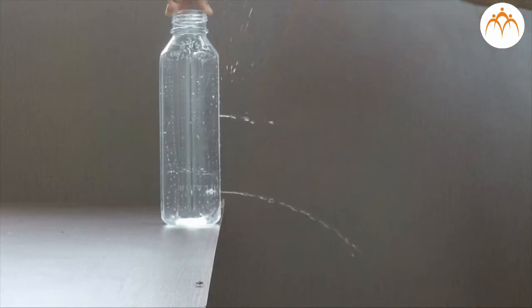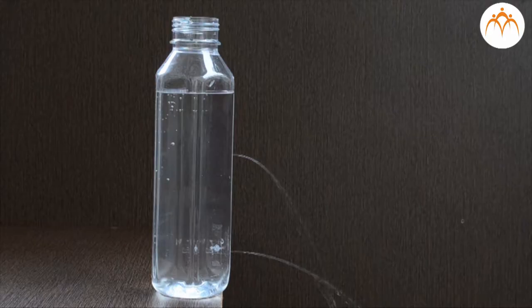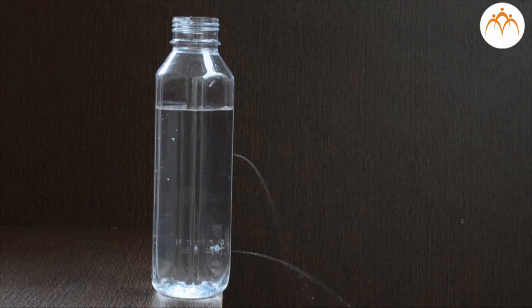Water is coming out of the bottom hole at a higher speed. Why? More liquid is present above the bottom hole than the middle hole. And it exerts more pressure near the bottom. It is because of pressure which is higher at the bottom as compared to the top.